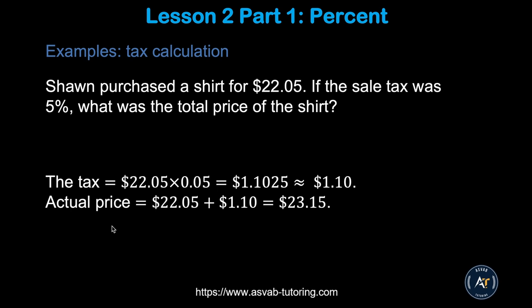Next: tax calculation. Remember, percent means every hundred dollars. For example: Sean purchases a shirt for $22.05; if the sales tax is 5 percent, what is the total price? You need to find 5 percent of $22.05 — convert percent to decimal and multiply.